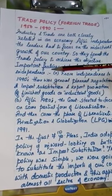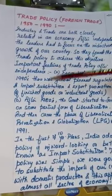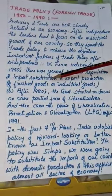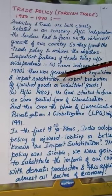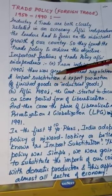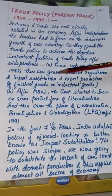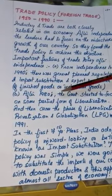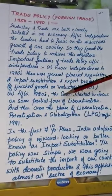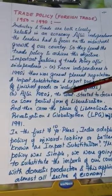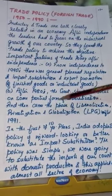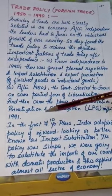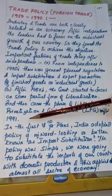The general approach was planned regulation. Import substitution was more important — that means substituting imported goods with domestic goods and promoting exports of finished products. After 1980, the government started to focus on some partial form of liberalization, and then came the phase of liberalization, privatization, and globalization, known as LPG, after 1991.